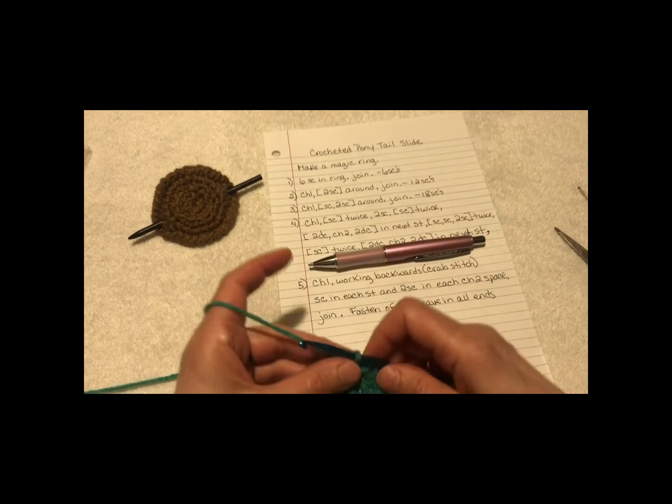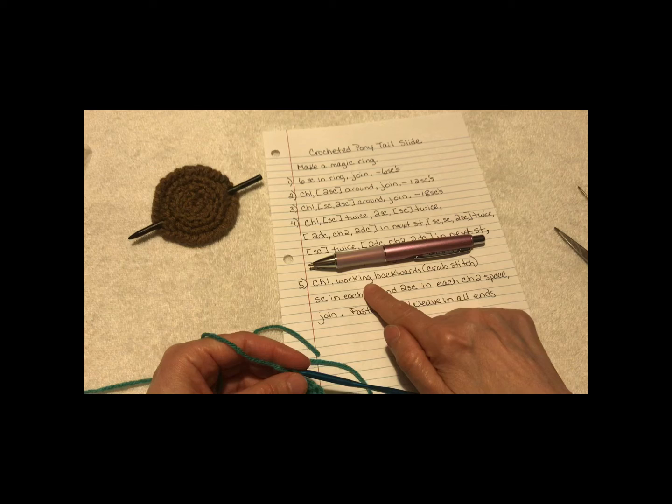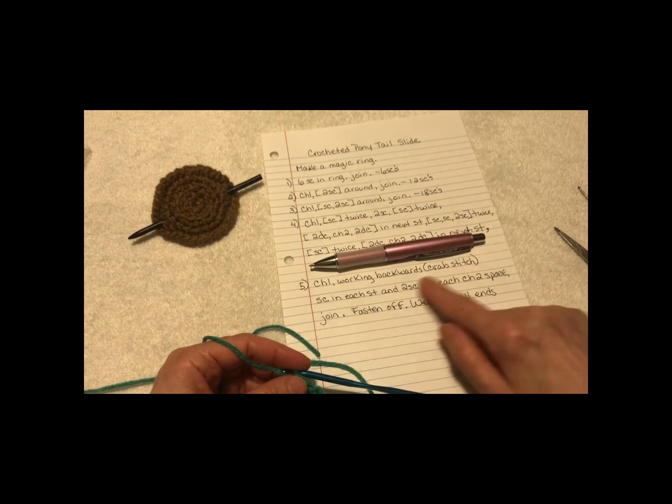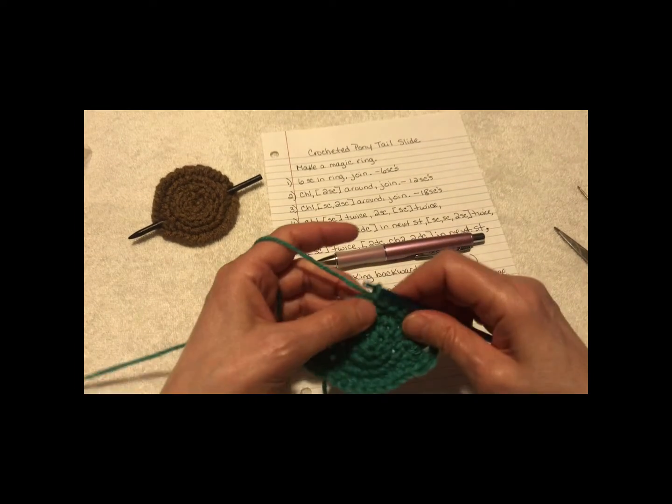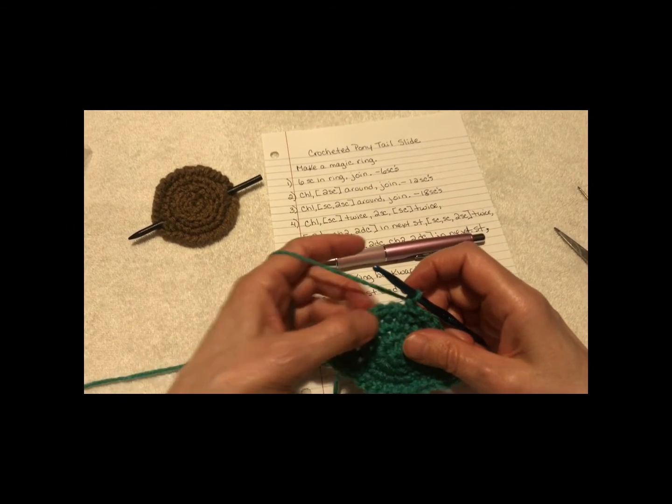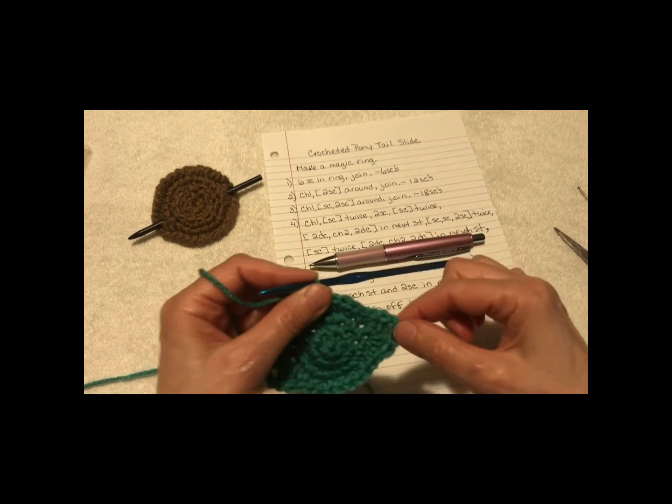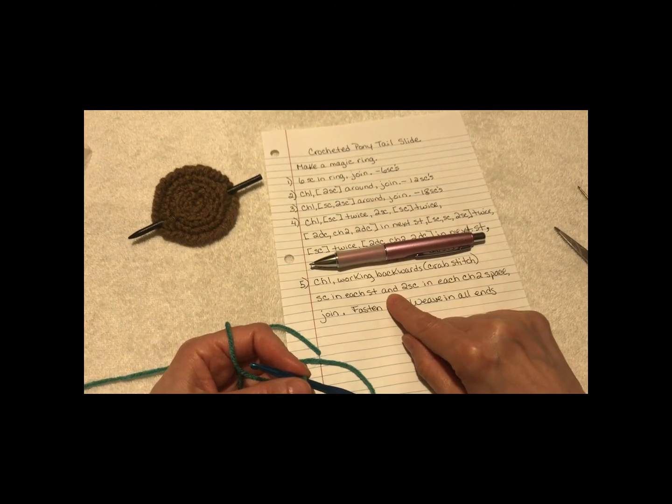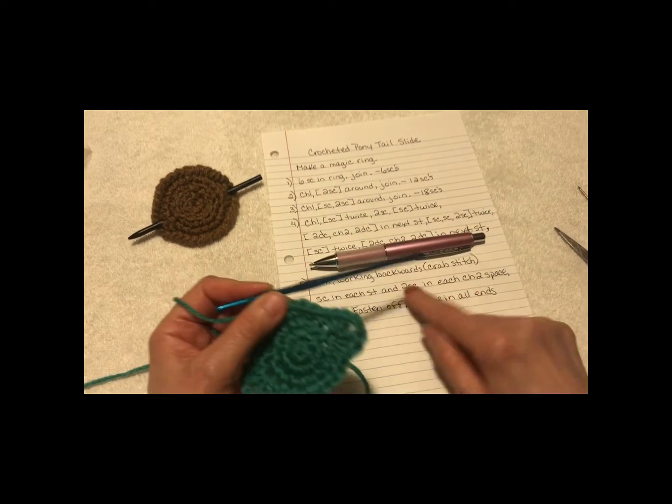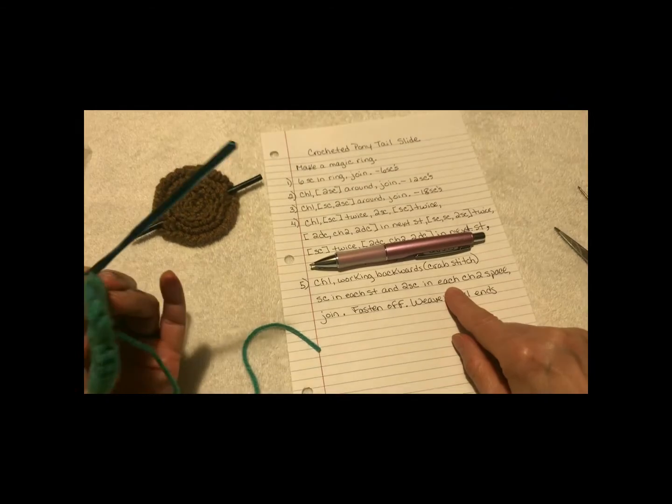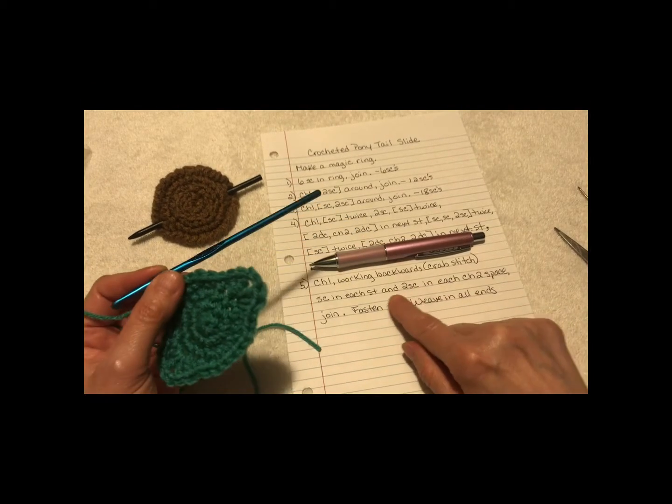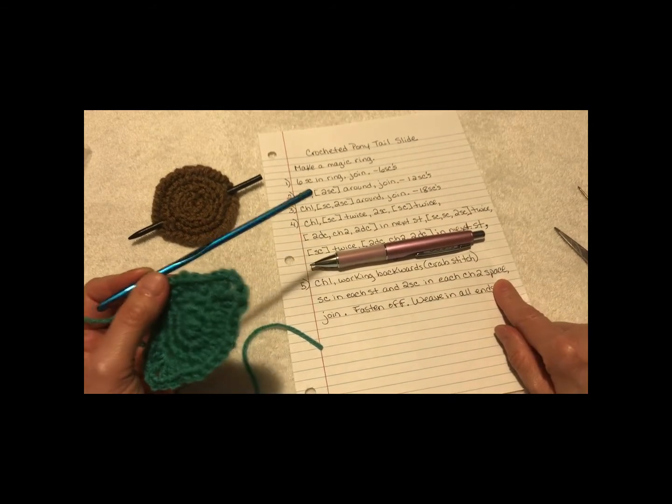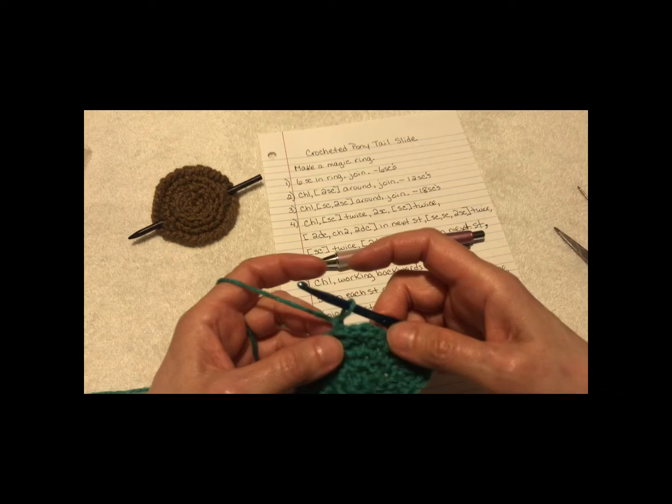For the last one, I want you to chain 1, and we're going to be working a single crochet backwards, and that's called a crab stitch. So, in each stitch around, working instead of from right to left, we're going to be working left to right. You're going to do a single crochet, and then, in each chain 2 spot, you're going to do two single crochets. This is how you do this. There's the join, so skip that one.